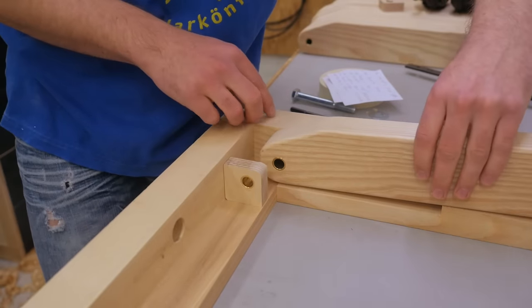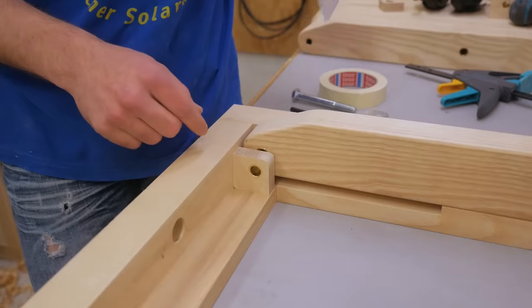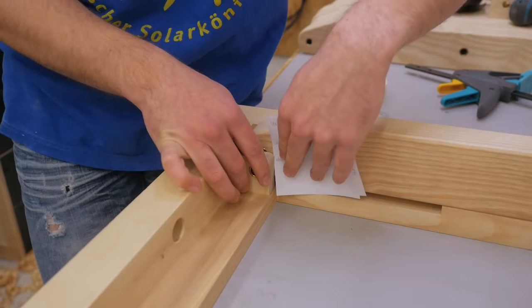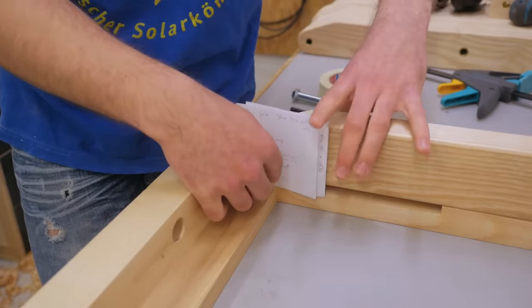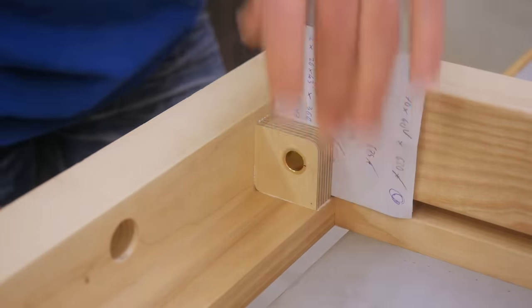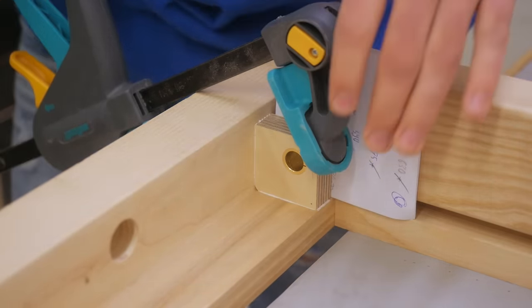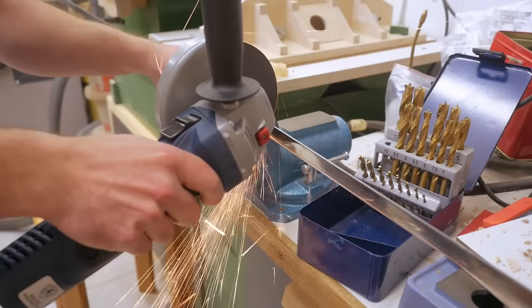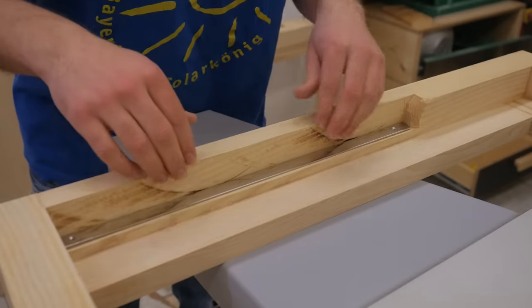Now I can glue it in place and I'll use the piece and the two washers as spacers. Plus the thickness of two pieces of paper for the thickness of the varnish and the wood movement.